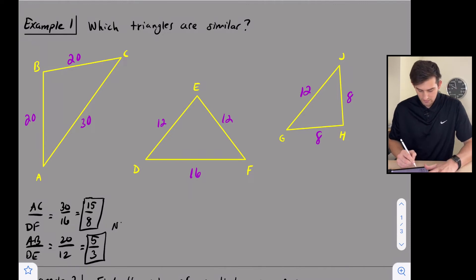We can write in here our similar sign and draw our line through it. So those are not similar. ABC is not similar to triangle DEF.